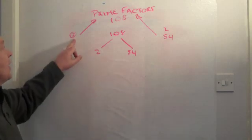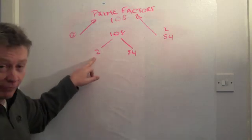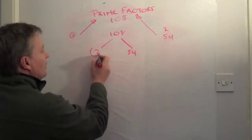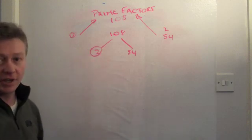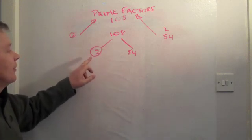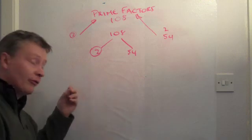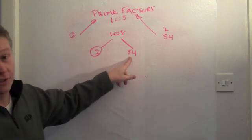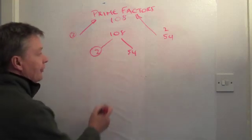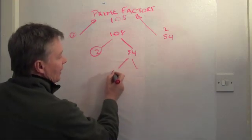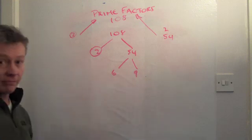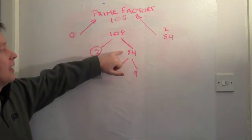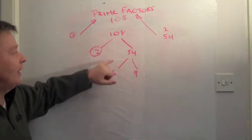And as we've already said, 2 is a prime factor. So I can circle that to say that there is no other number that will go into 2 apart from 1 and itself. However, that's not true for the number 54. Because with 54, I could say that that's 6 times 9. So 54 is not a prime number or a prime factor.